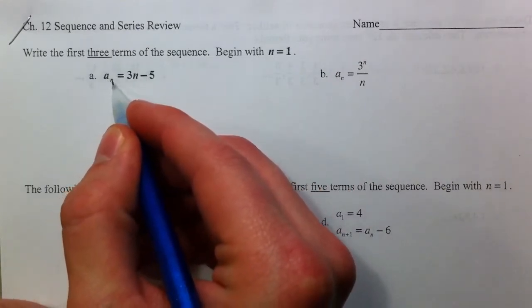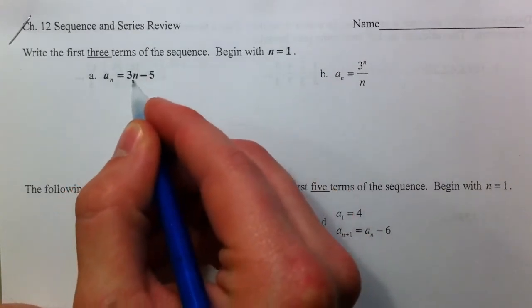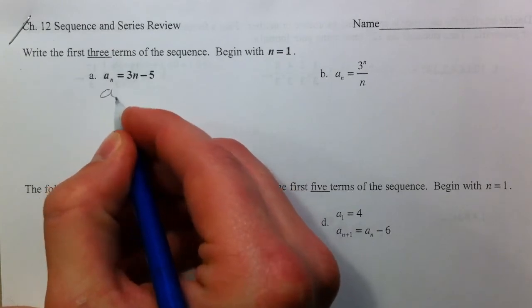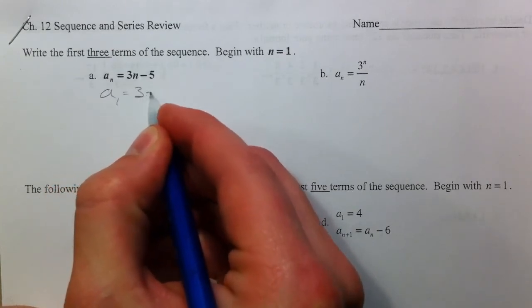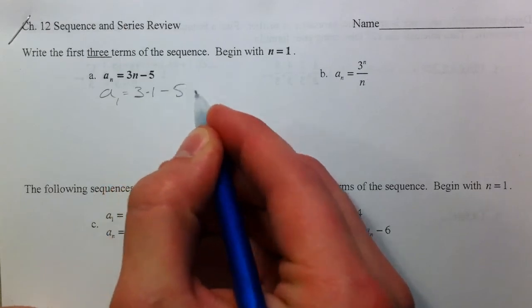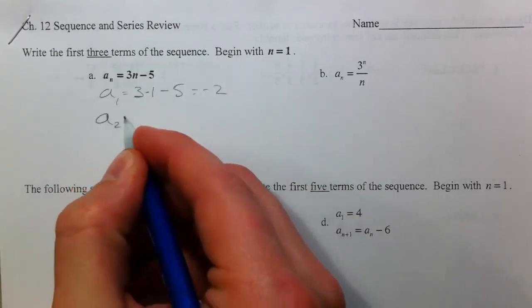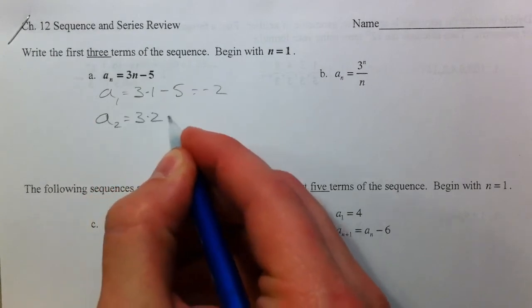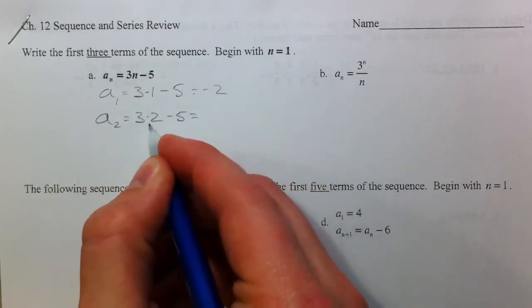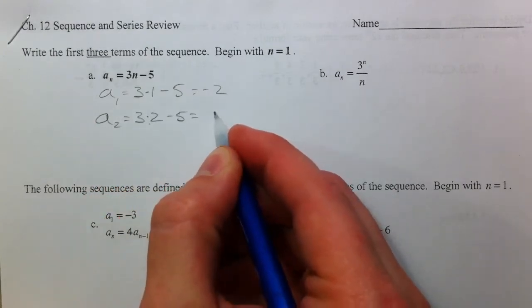Nth term equations allow you to, for the first term, just plug in 1 for n. So the first term is 3 times 1 instead of 3n minus 5. So 3 minus 5 is negative 2. Second term, plug in 2 for n. 6 minus 5 is 1.